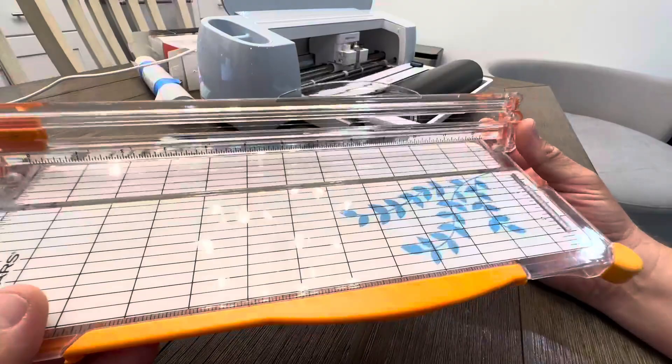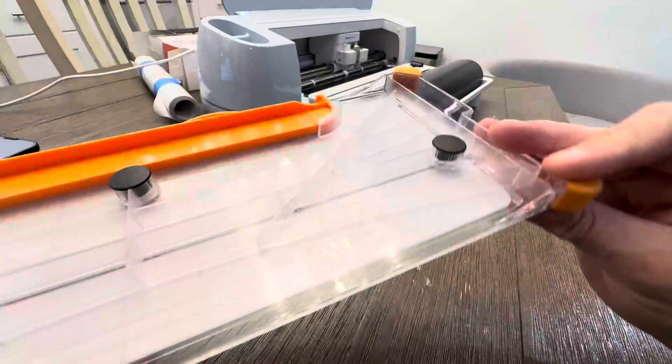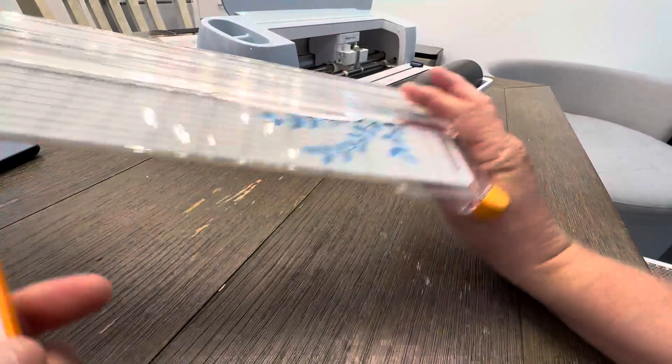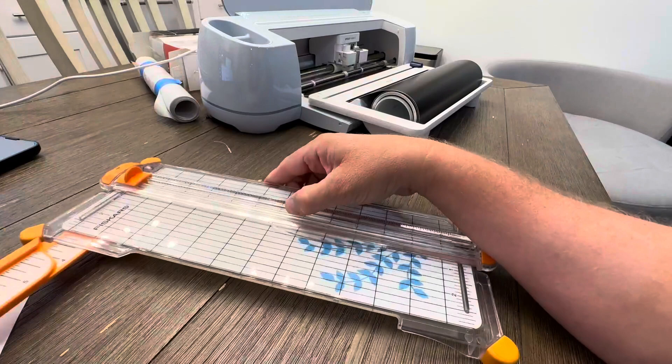It's got a rubber bottom so it doesn't move easily, and this folds out as well so that you can have an extended measurement for your paper if you want to measure it up to about 10 inches, 11 inches.